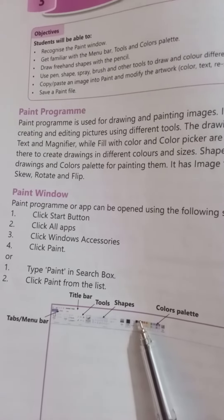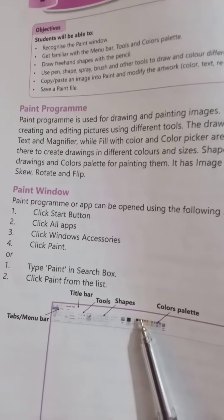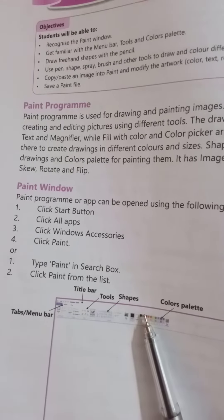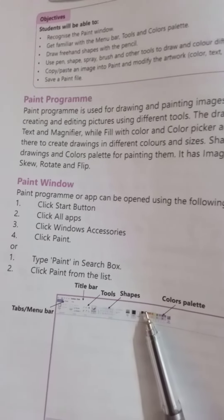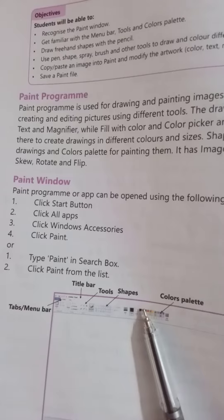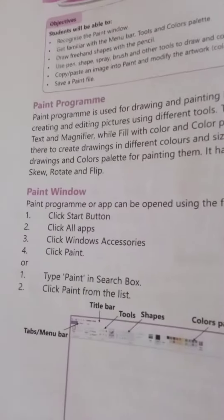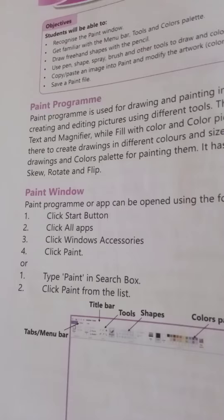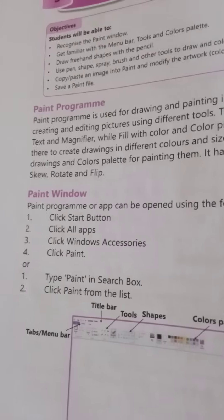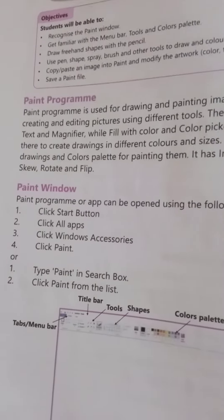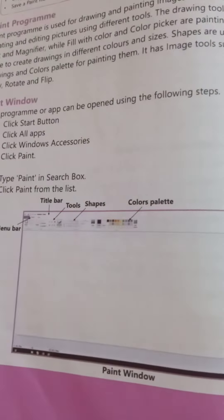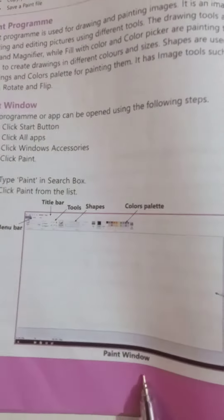Now, how to open the Paint window. First, click the Start button, click All Apps, click Windows Accessories, then click Paint. Alternatively, you can type Paint in the search box and click Paint from the list, and a Paint window will appear.